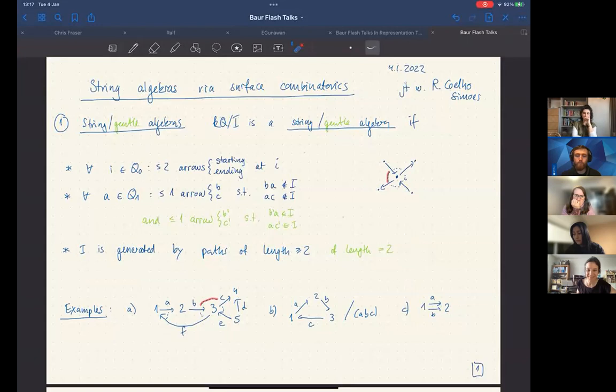And then if that's the objection to being gentle, there are other objects and so examples for this are these three.